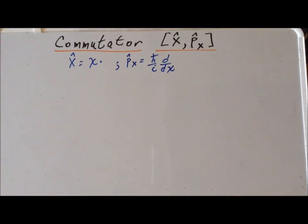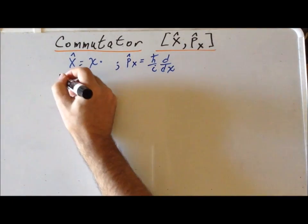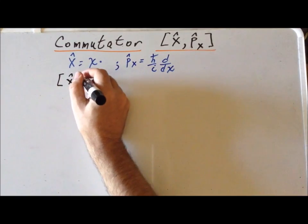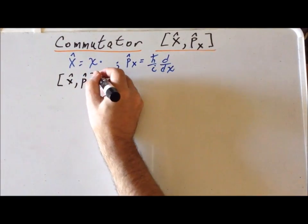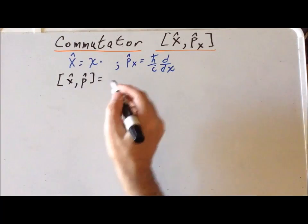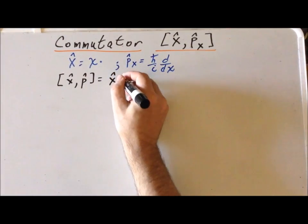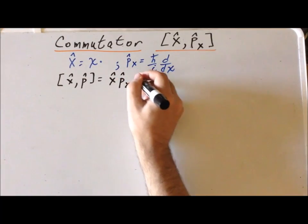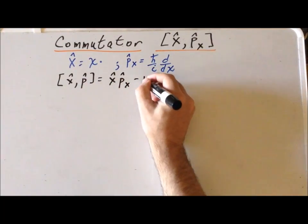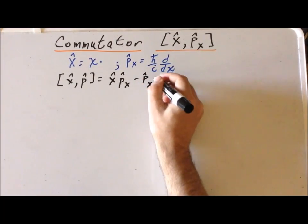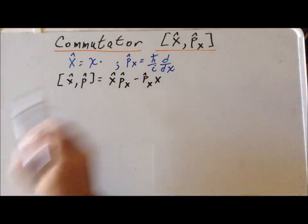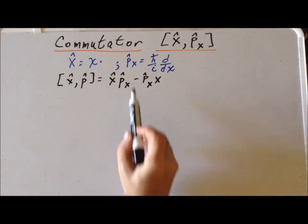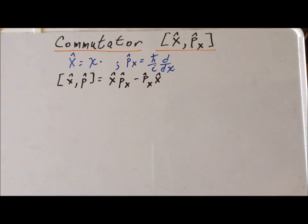Using those bits of information, we want to determine the commutator. Recall, to define the commutator for any two operators, this is equal to the first operator acting on the second operator minus the second operator acting on the first operator. If these two operators commute, this difference will be exactly zero. If they don't commute, we'll get a non-zero value.